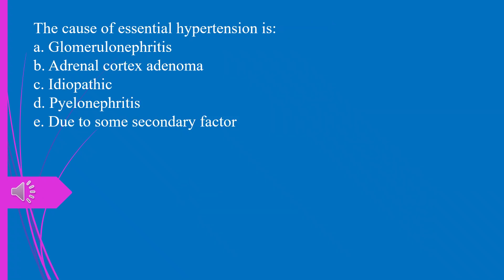Question 37. The cause of essential hypertension is: a) glomerulonephritis, b) adrenal cortex adenoma, c) idiopathic.